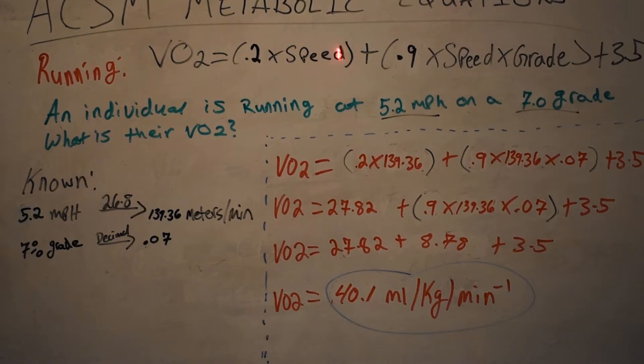So 0.2 times the speed is the first part of the equation—that's your horizontal component. Then your vertical component plus 0.9 times the speed times the grade, and then of course your constant of plus 3.5 mls per kg per minute. Remember this is your resting VO2, your resting oxygen consumption. That's the same for every single human individual: 3.5 mls per kg per minute.